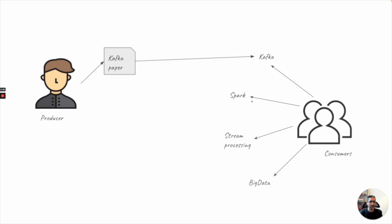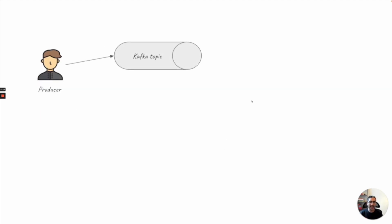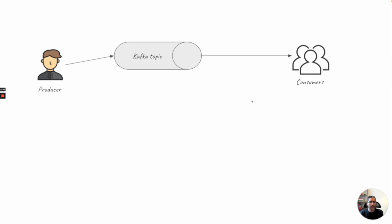We just took the example of our notice board and made it a bit more complicated, and this is how something like a Medium application works. Now let's talk about data exchange in stream processing. In our previous case, we saw that data is exchanged more in a batch mode — either via email, which can be delayed by a day or an hour, or via a flyer on a notice board that the consumer only sees when they pass by. In stream processing, this data is being exchanged in more real time.